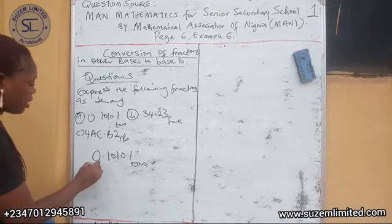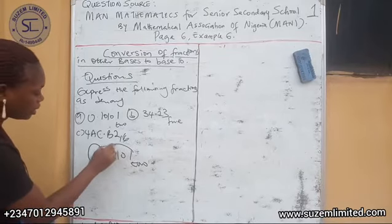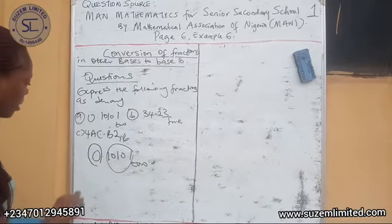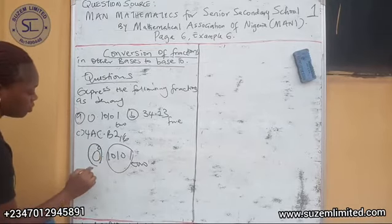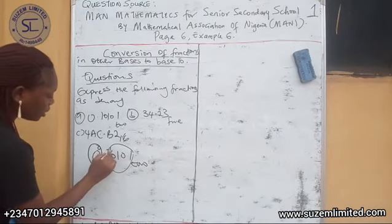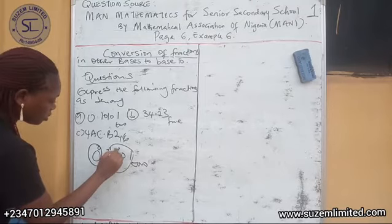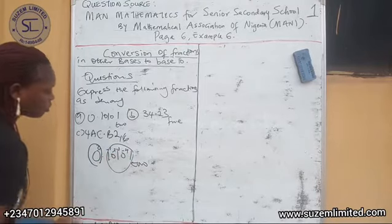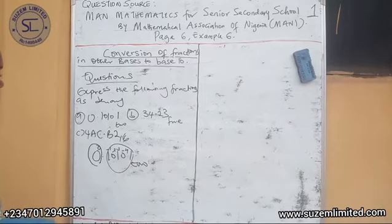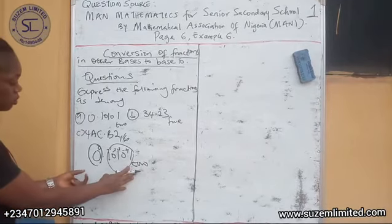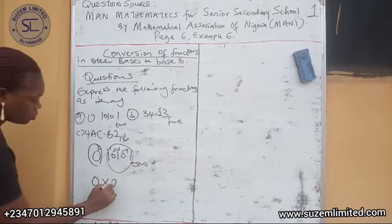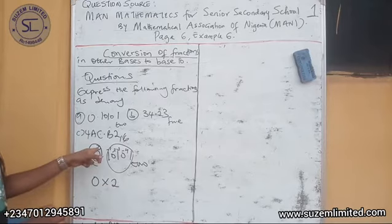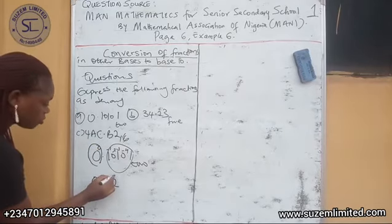Looking at it, we have an integral part and a decimal part. In numbering the integral part, we start from 0. But from the decimal part, we start from minus 1, minus 2, minus 3, and then minus 4. Now, because this number is in base 2, we start from 0 times 2 raised to the power 0 — because this 0 is at position 0, our base 2 will be raised to the power 0.